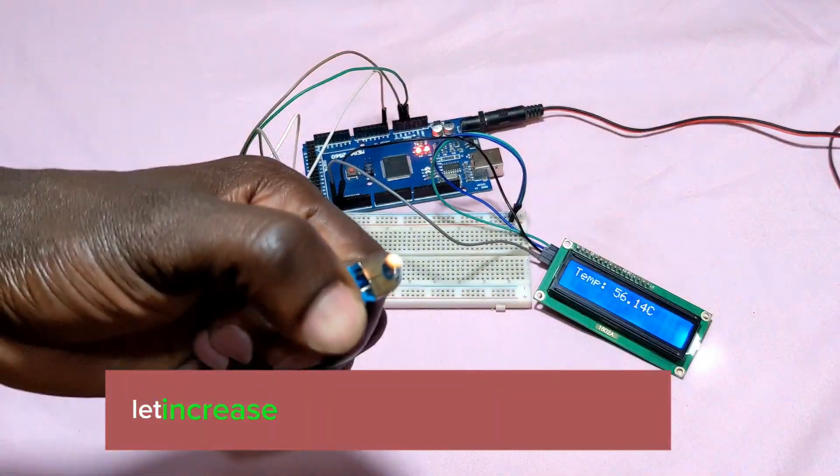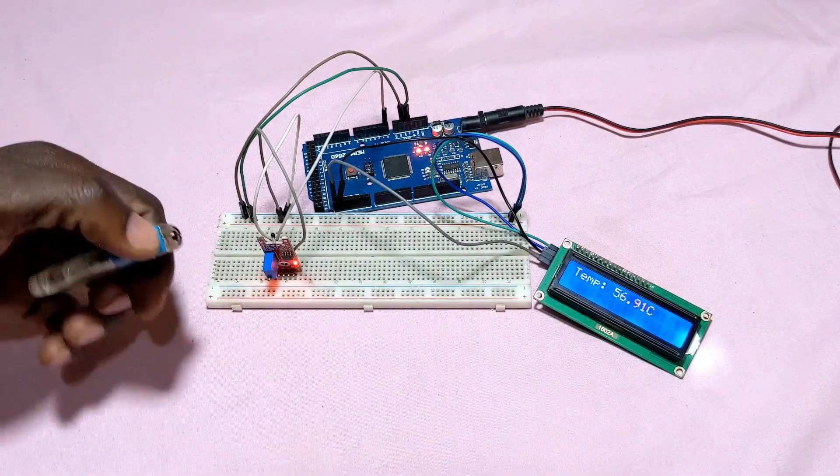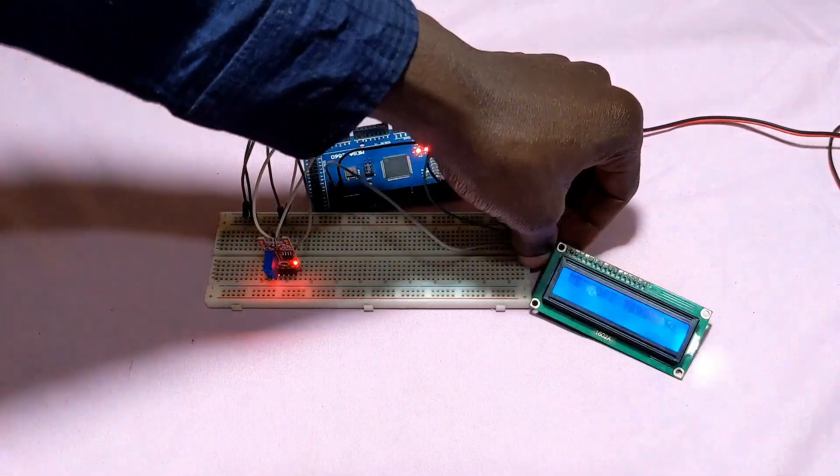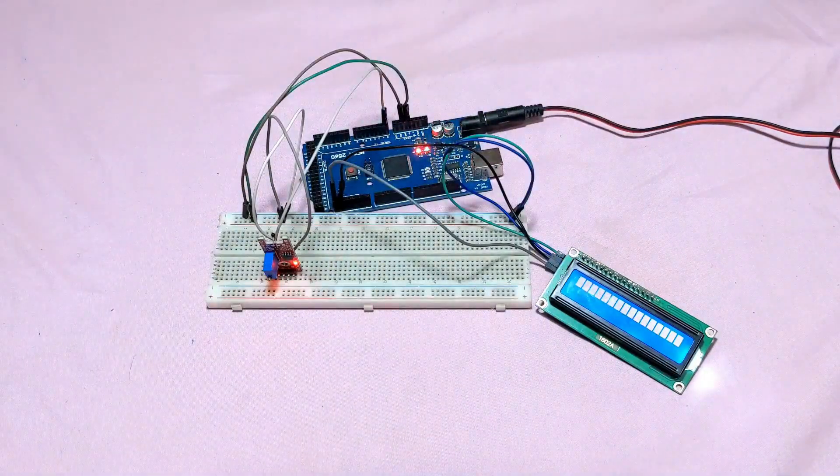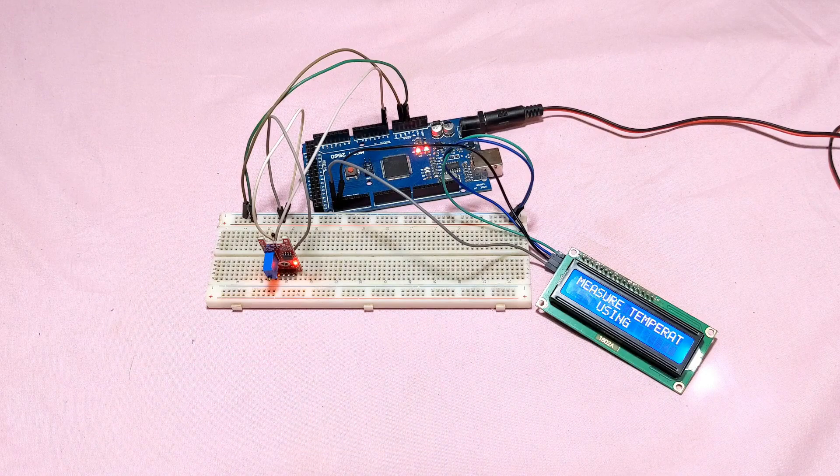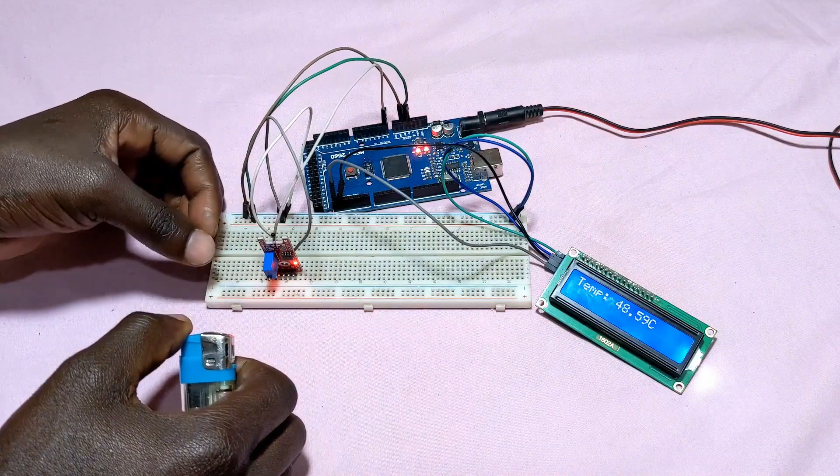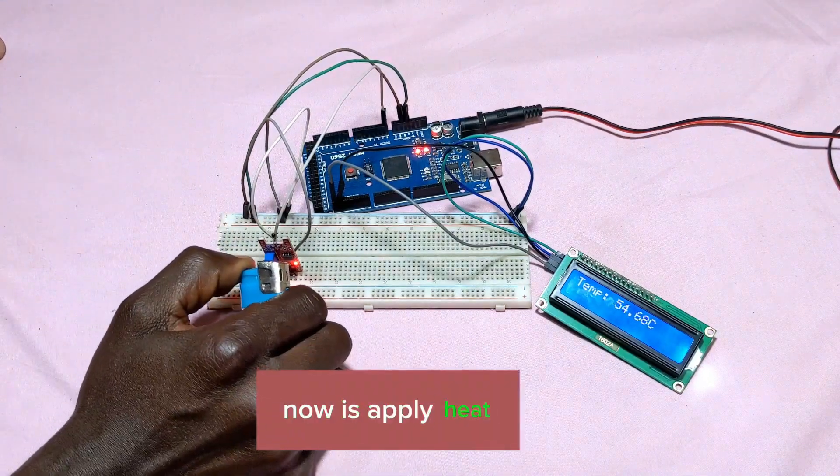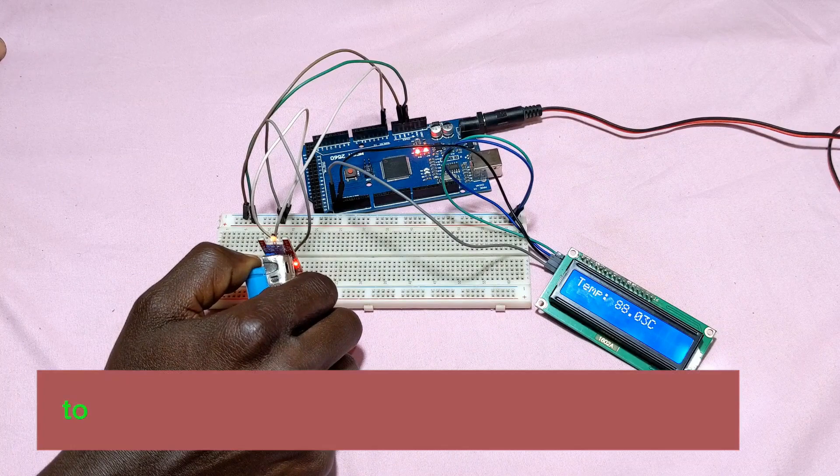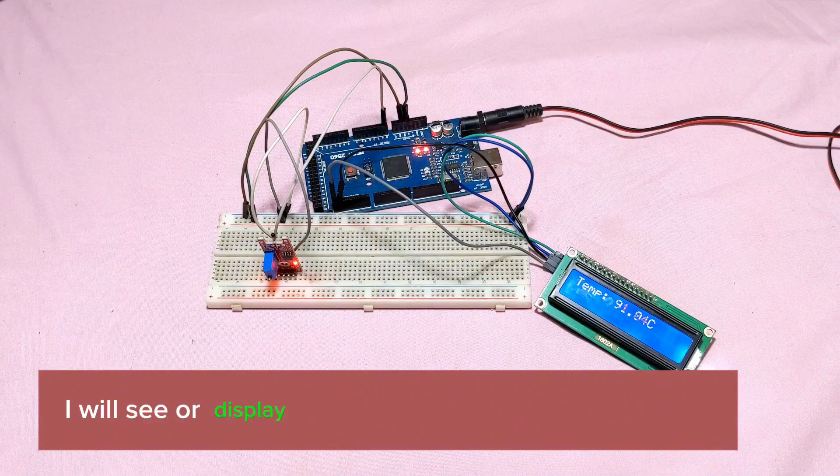Let's increase the heat and see what will happen. Now let's apply heat. You see the temperature change! The temperature increases. When I remove the heat, you'll see the display shows the temperature increasing as it measures the warmth.